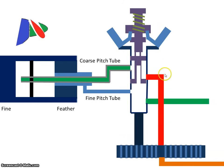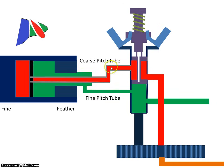When the pilot valve moves up, the high-pressure oil from the engine can now flow out, cross through the coarse pitch tube, into one side of the piston.